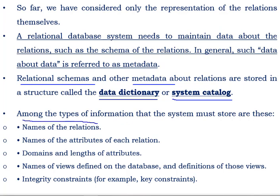Among the types of information that the system must store is the name of the relation. So metadata first should hold the name of the relation, then the name of the attributes of each relation — for example, in a student database: roll number, name, contact number. All these attribute names should be there in metadata.